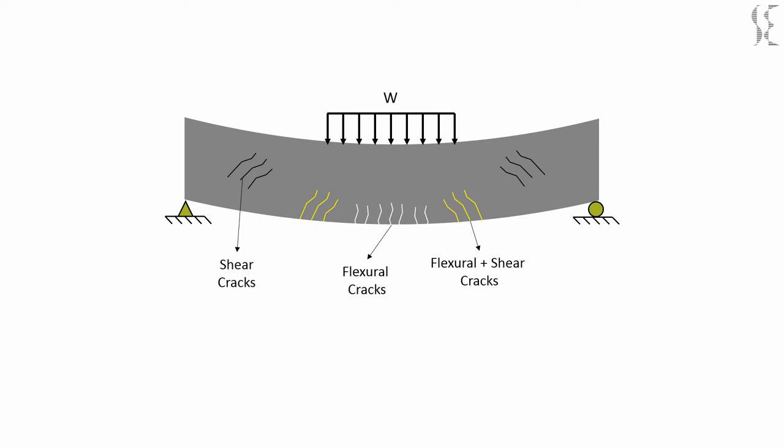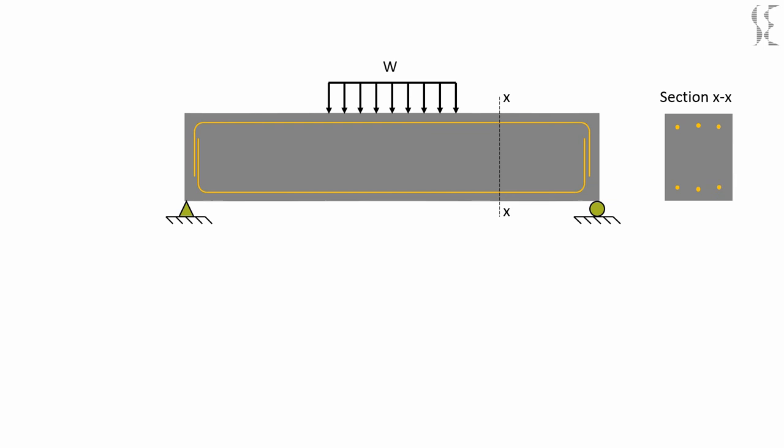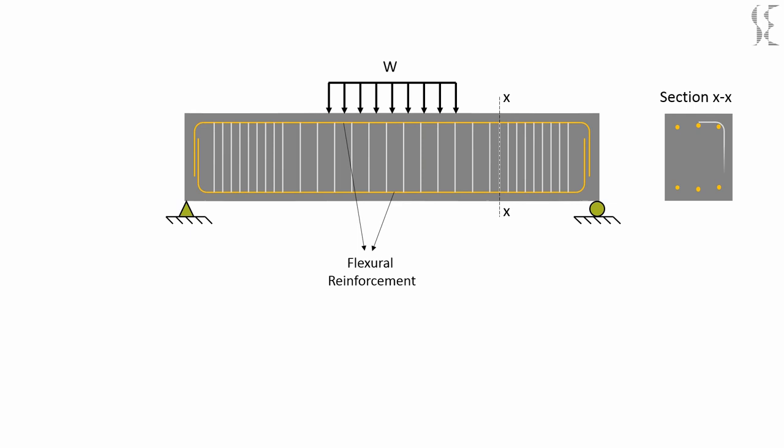To arrest these cracks, reinforcement is provided in the beam. The longitudinal reinforcement, also called flexural reinforcement, prevents the bending of the beam and hence arrests the cracks due to flexure and flexure plus shear. The shear reinforcement in the form of stirrups is provided to make the beam stronger in shear and prevent the shear cracks. Note that shear stirrups are closely spaced near the supports as shear is higher near the supports.